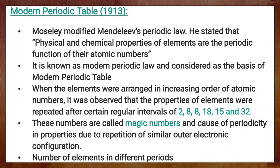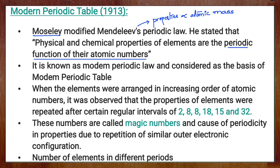We have studied Mendeleev's periodic law, where he told that the physical and chemical properties of elements are a function of atomic mass of the element. Moseley told that physical and chemical properties of elements are periodic functions of their atomic numbers. So previously Mendeleev classified elements according to increasing order of atomic masses, but later experimental studies showed that properties are periodic functions of atomic number. This law given by Moseley is termed as modern periodic law and is considered the basis for the modern periodic table.